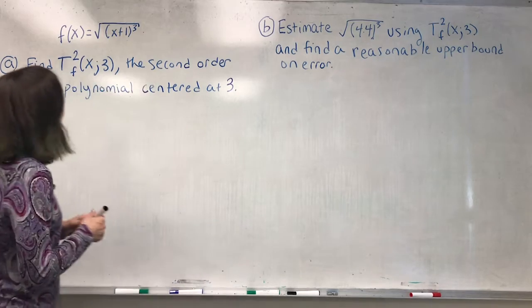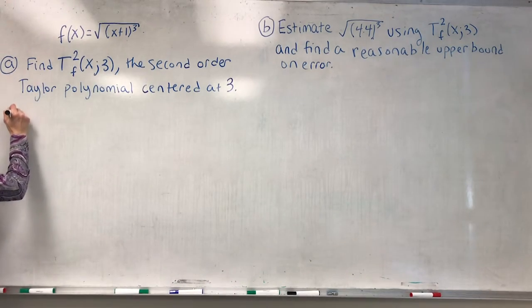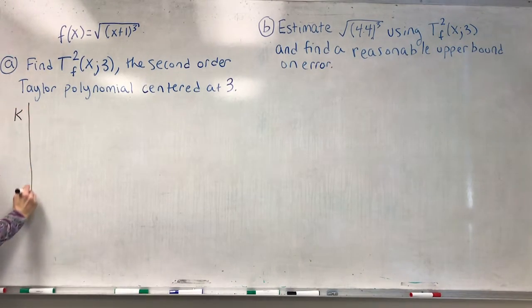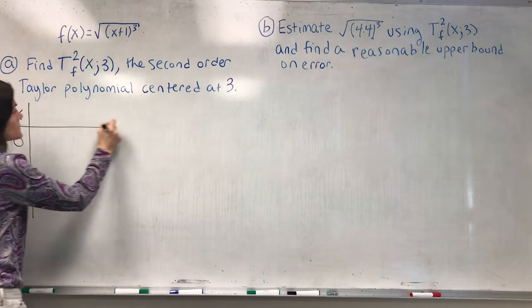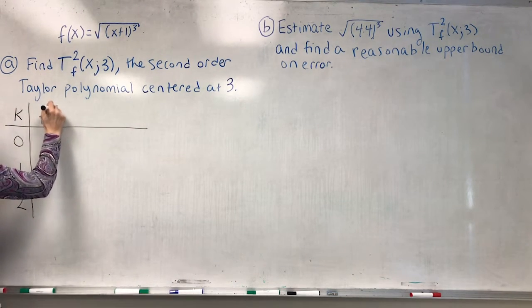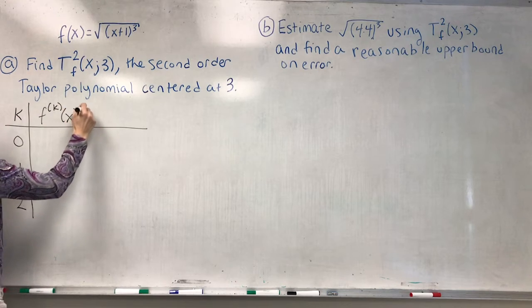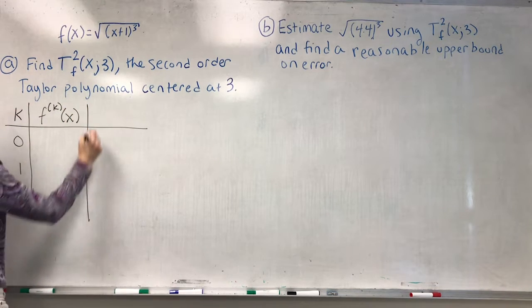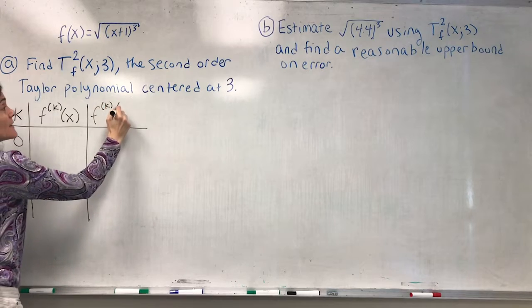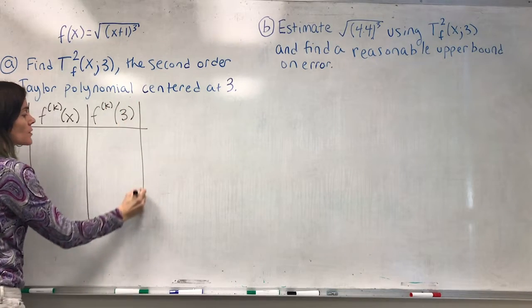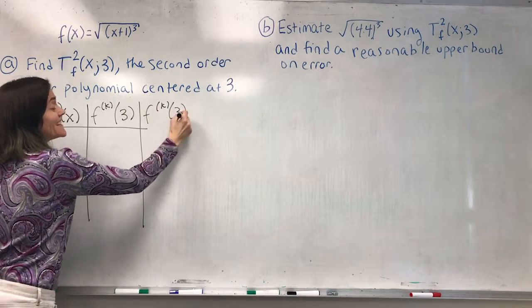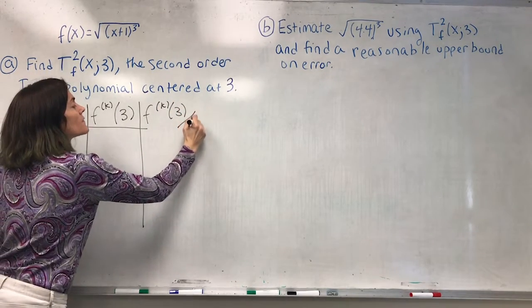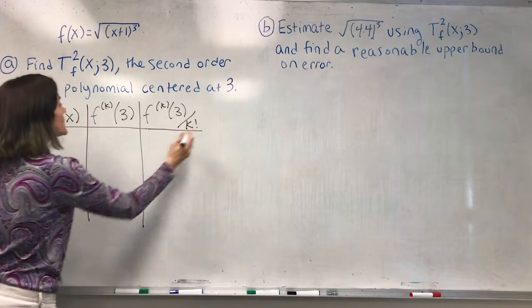When we're calculating second order, we need the derivatives up to the second derivative. I know the coefficients in my Taylor polynomial are of the form the kth derivative evaluated at the center, but then divided by k factorial.